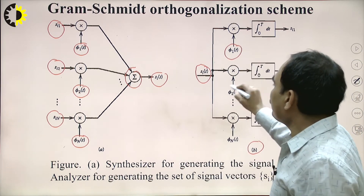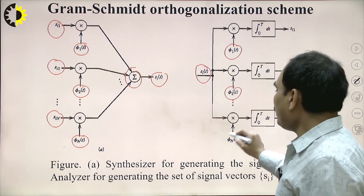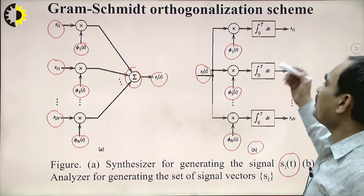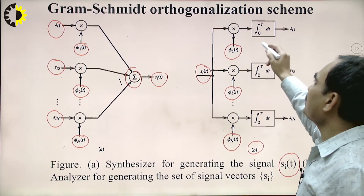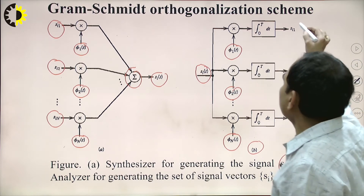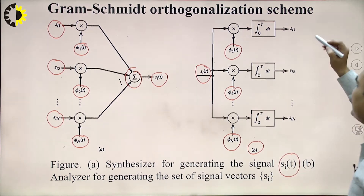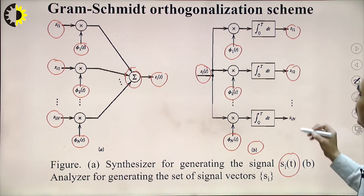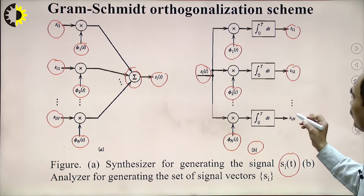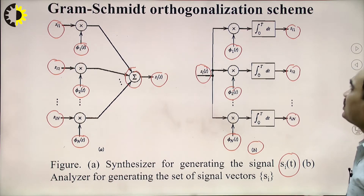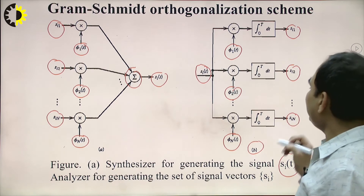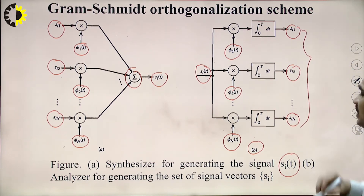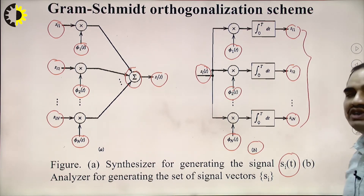The second part shows the analyzer for generating the set of signal vectors — at the demodulated or receiver side, we are again splitting the signal. We receive s₁ᵢ(t) and multiply again with the same basis functions φ₁(t), φ₂(t) up to φₙ(t). After passing through a low-pass filter, we get the split signals s₁, s₂, up to sᵢₙ — different message points or signals.